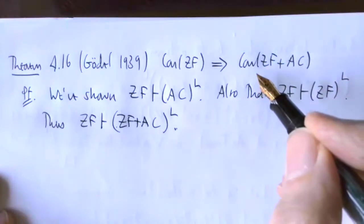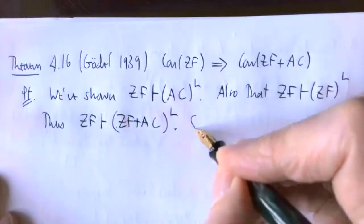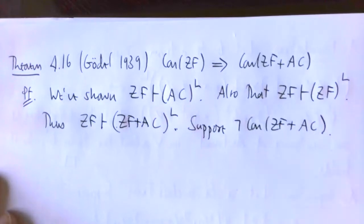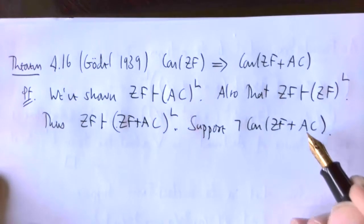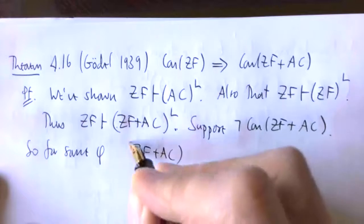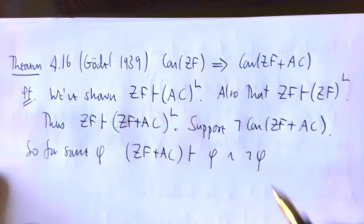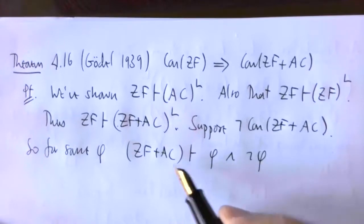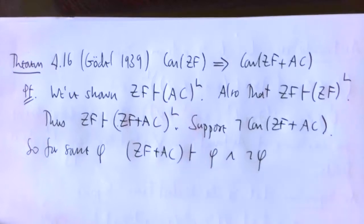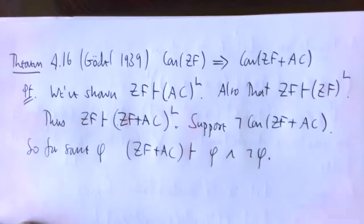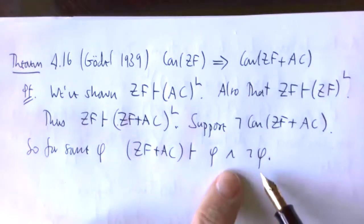And so, again, an argument by contraposition, we assume that this is inconsistent. So this means from ZF and AC, we can deduce something and its negation. It proves both phi and not phi. A proof is a finite object, just a list of lines of either axioms or things we've derived using first-order logic from previous lines, and it ends up with phi and not phi here.